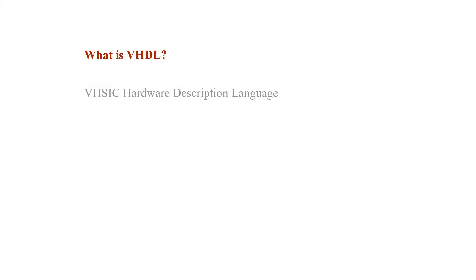What is VHDL? VHDL is an acronym for Very High Speed Integrated Circuit Hardware Description Language, meaning it's a language that describes hardware or physical hardware. Unlike any other software programming language that you may know, VHDL describes hardware instead of software, meaning you can type VHDL code and then compile it, test it, and then synthesize it into a physical hardware device.